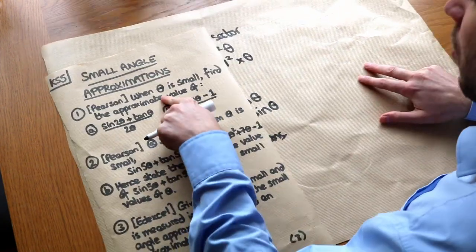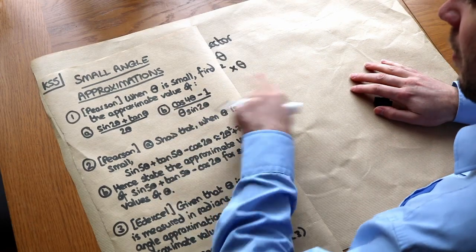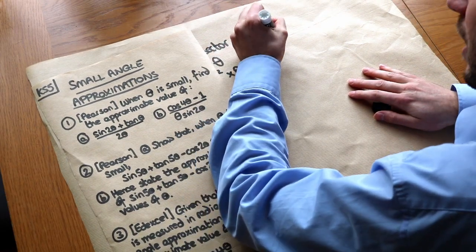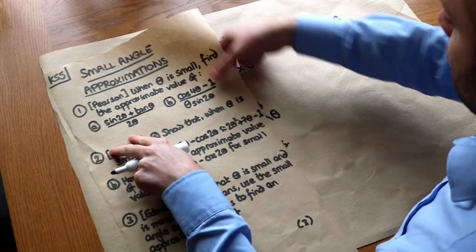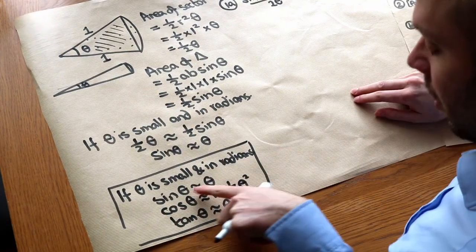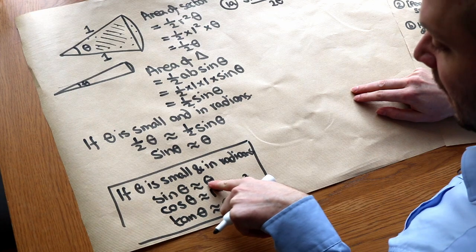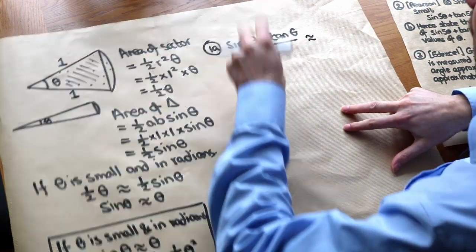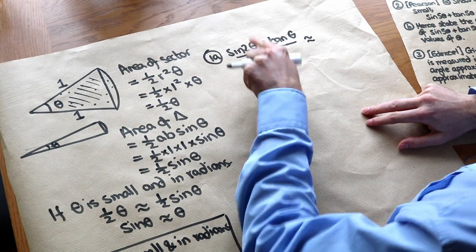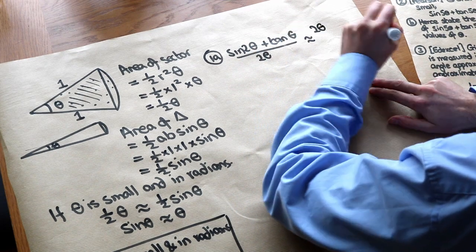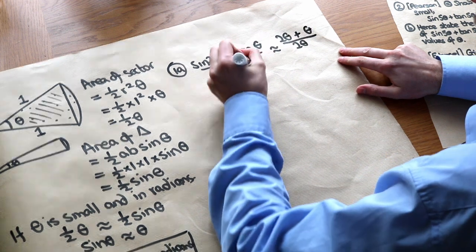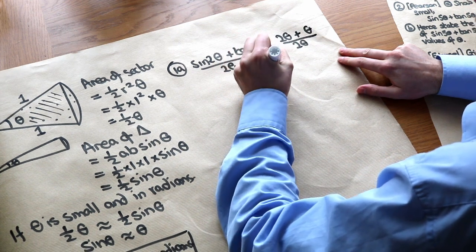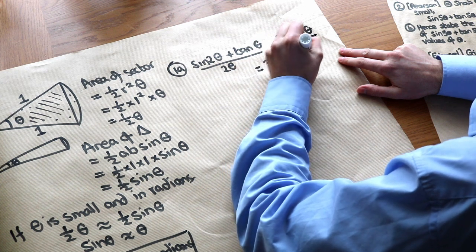This question is from the Pearson textbook. When theta is small, find the approximate value of (sin2θ + tanθ) / 2θ. Using the approximations, sin2θ ≈ 2θ and tanθ ≈ θ. So the expression becomes (2θ + θ) / 2θ = 3θ / 2θ, which equals 3/2. So 3/2 is the approximate value of this expression when theta is small.